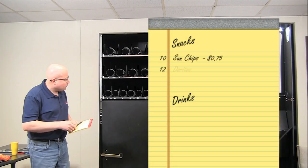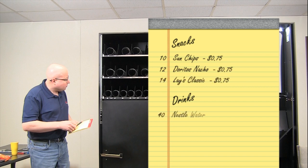Now we are going to load the product. It is recommended that you write all the numbered locations in the machine on a sheet of paper. Then write the product and price of each you are putting in each location to be used when you program the pricing software.